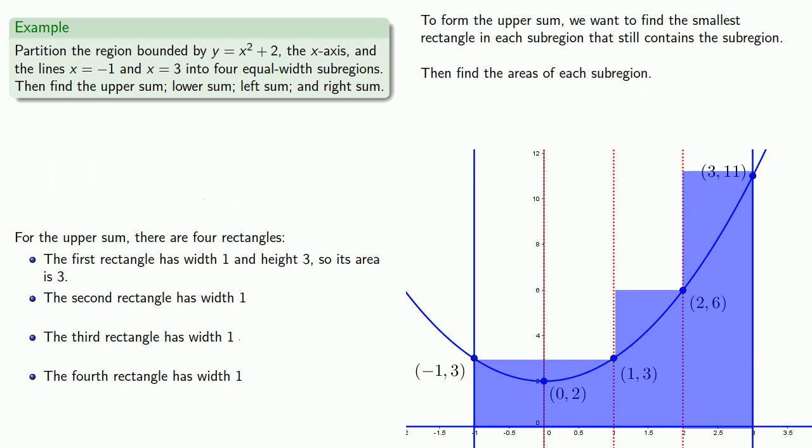The second rectangle also has width 1, and the top of the rectangle runs through this point, so the height of the rectangle is also going to be 3, and its area will also be 3. We can make a similar observation for the height of the third and fourth rectangle. So we can now compute the upper sum as the sum of these areas, which will be 23.